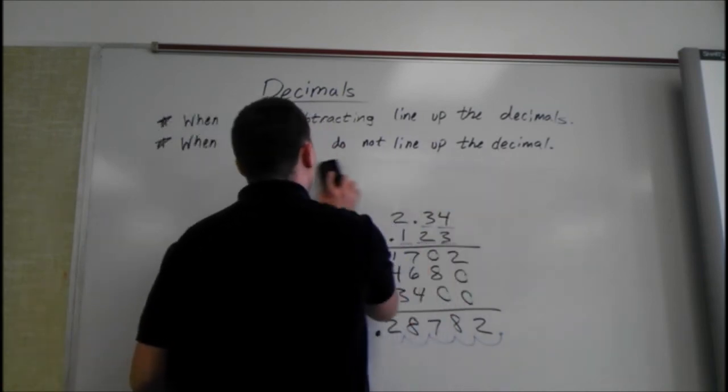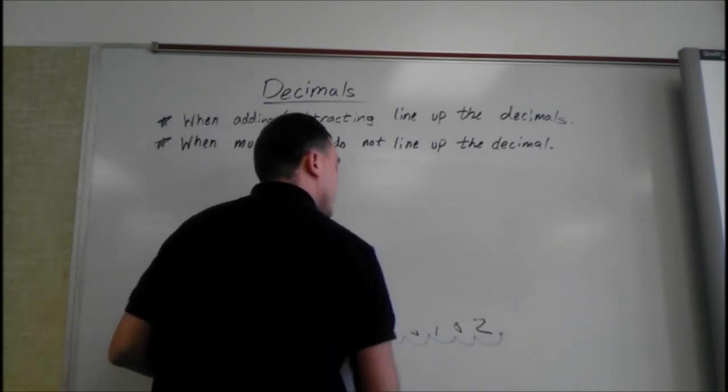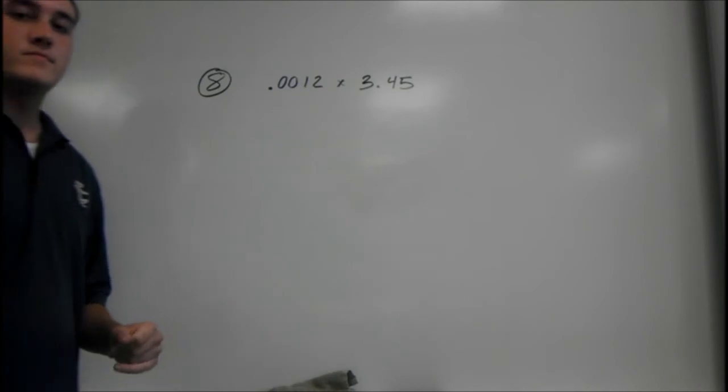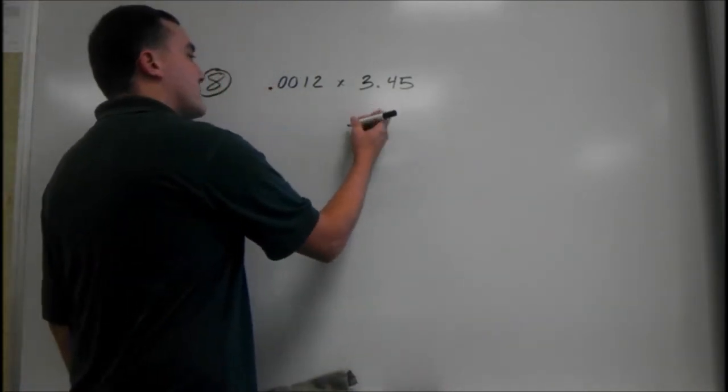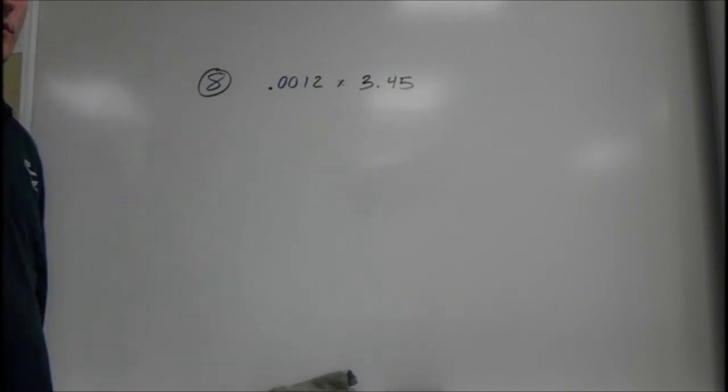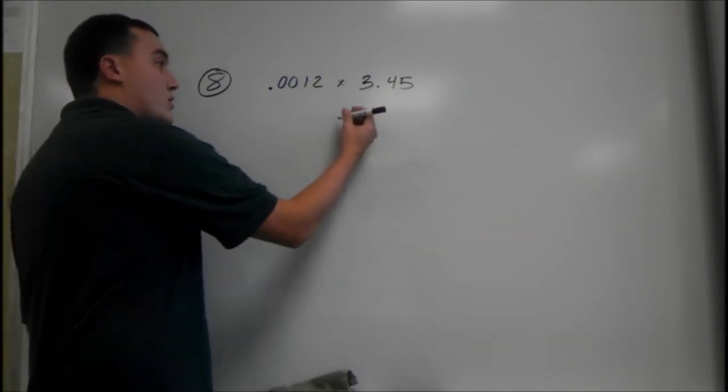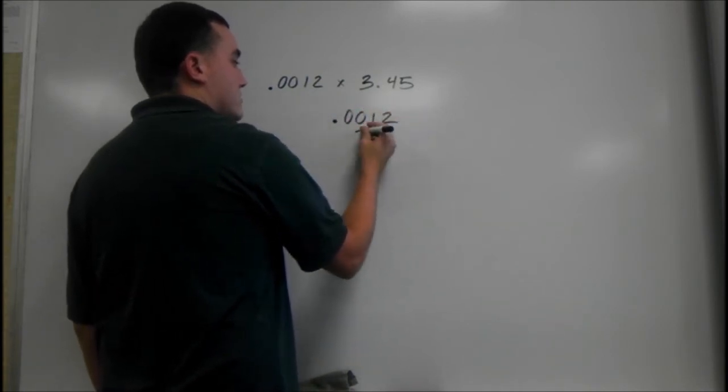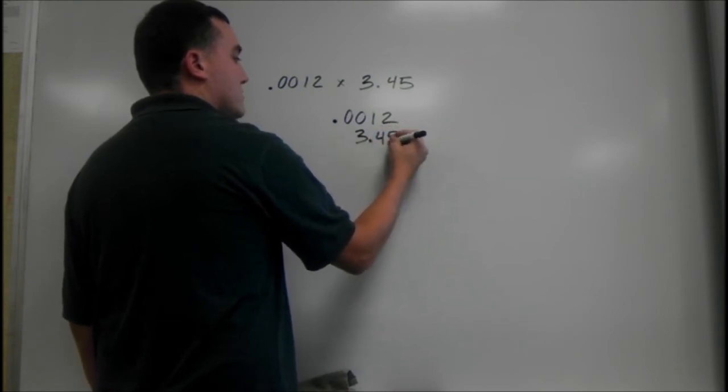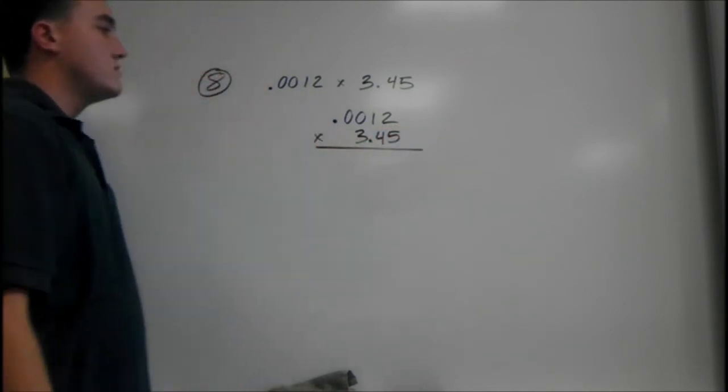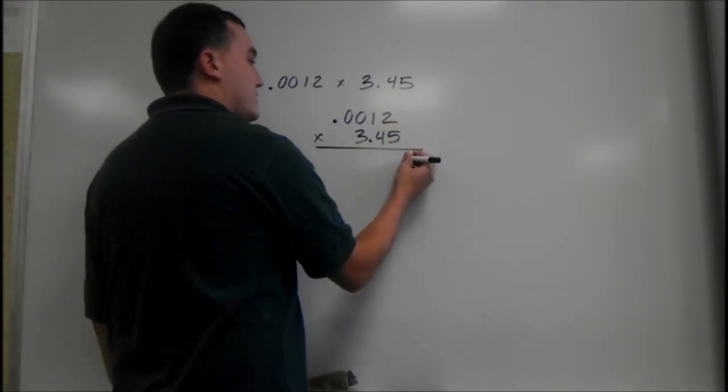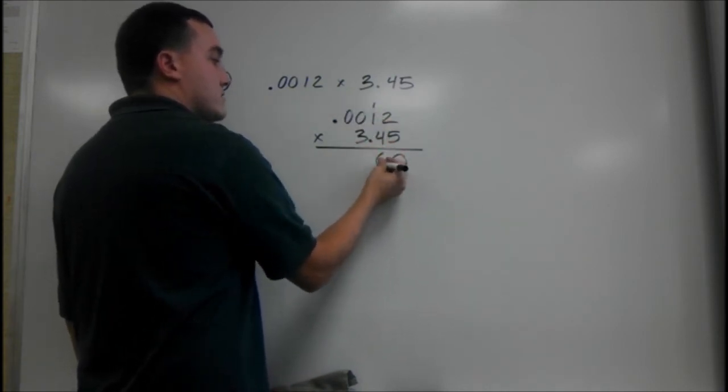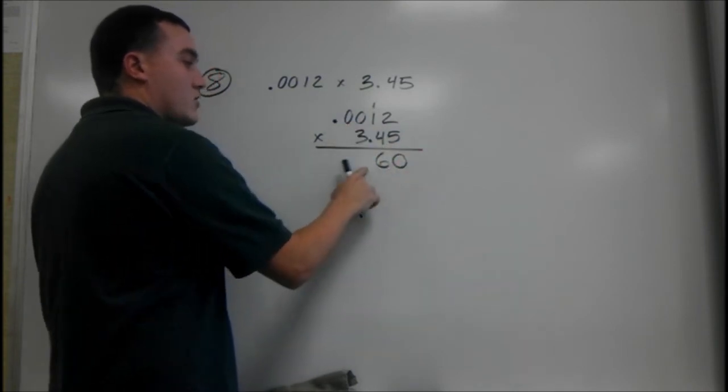And the last problem. We have 0.0012 times 3.45. The first thing we're going to do is put one on top of the other and multiply like we usually do, like a regular number. 5 times 2 is 10, and 1 goes on top. 5 times 1 is 5, which plus 1 is 6. And since these are 0s, 5 times 0 is going to be 0, so we don't have to put anything here.